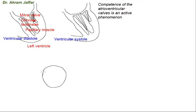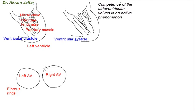This represents the fibrous skeleton of the heart. The fibrous skeleton consists in part of fibrous rings that surround the atrioventricular canals and the origins of the aorta and the pulmonary trunk. These are the two atrioventricular canals — the right one and the left one.